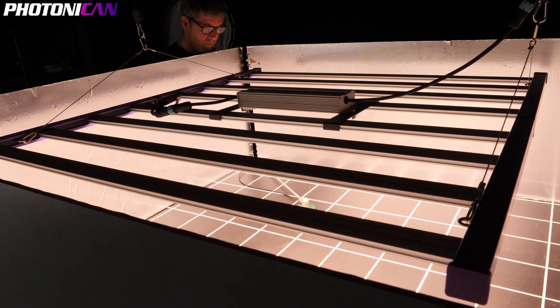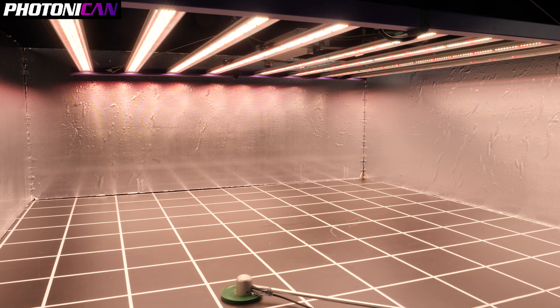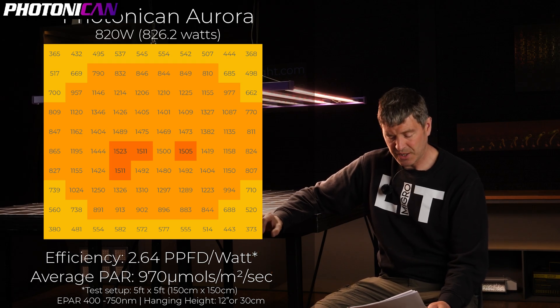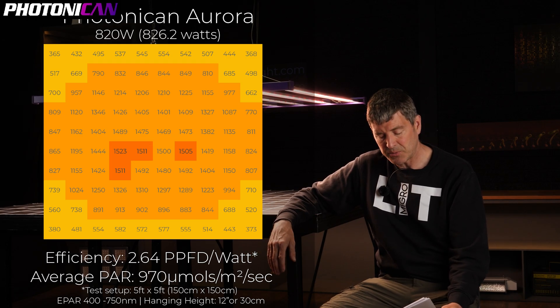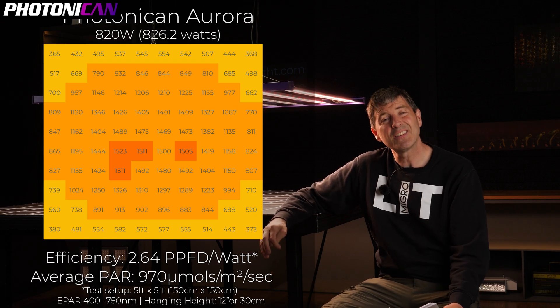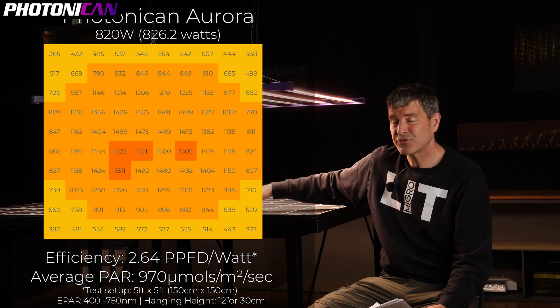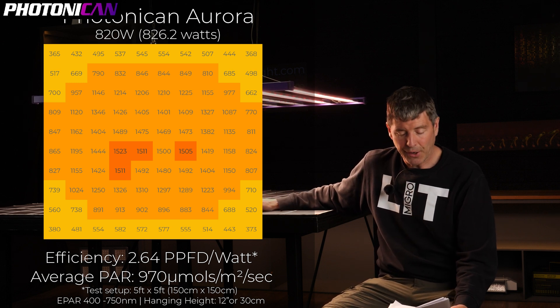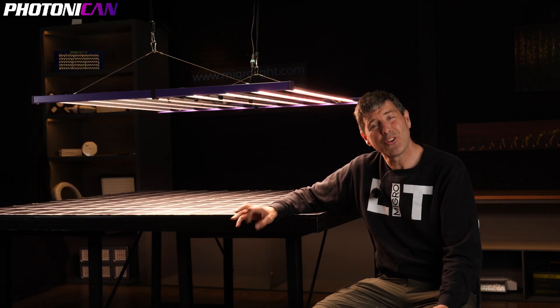I put it in at two different hanging heights. First at 18 inches hanging height, or 30 centimeters, and this gives the maximum amount of power—not the most even spread, but a very good high level of 970 micromoles average and system efficiency of 2.64. That's right up there now, it's a really high performance light.